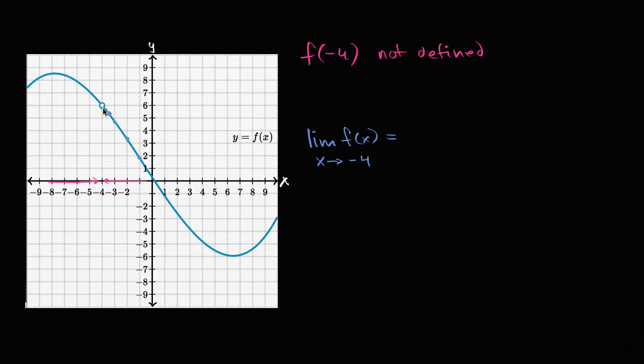This is f of negative three point nine. This is f of negative three point nine nine nine nine nine. And so you can see the value of our function, as x gets closer and closer to negative four, from values greater than negative four, seems to be approaching six.